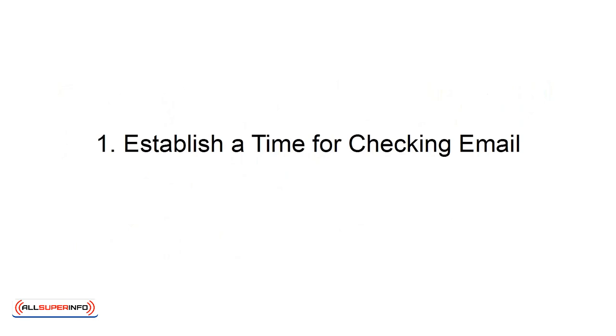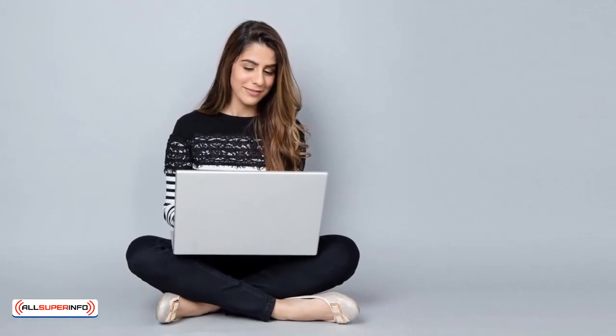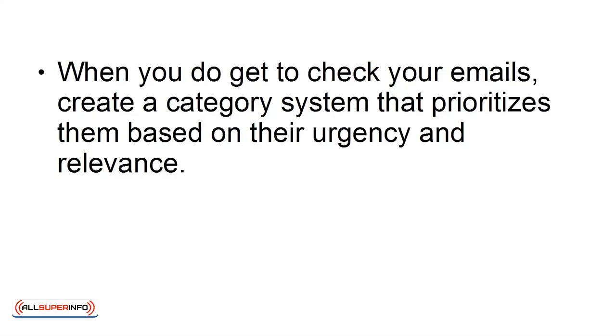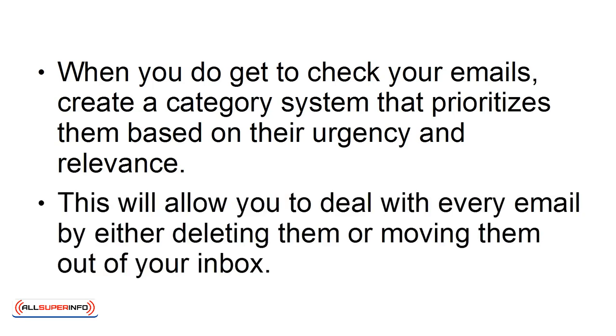1. Establish a time for checking email. Many people regularly check their email, eating up valuable time. To reduce the time you spend checking email, block specific times out on your calendar for reading and categorizing emails. Most emails that you receive can wait a few hours, and often the issue will resolve themselves on their own. When you do get to check your emails, create a category system that prioritizes them based on their urgency and relevance. This will allow you to deal with every email by either deleting them or moving them out of your inbox.